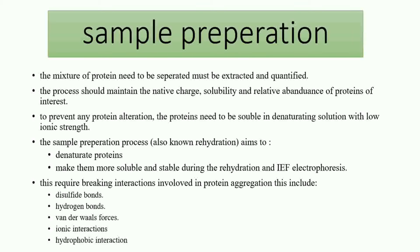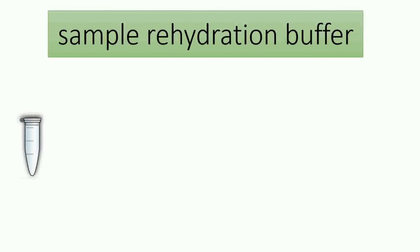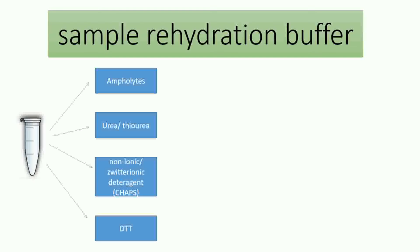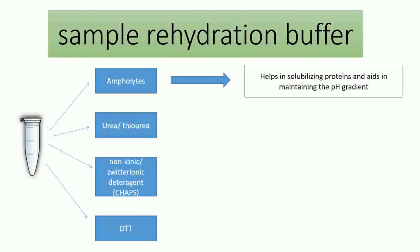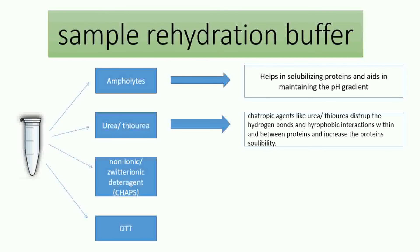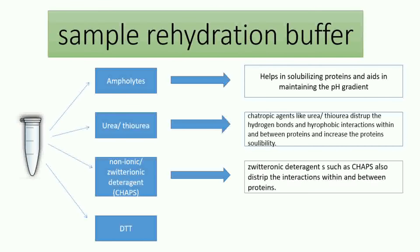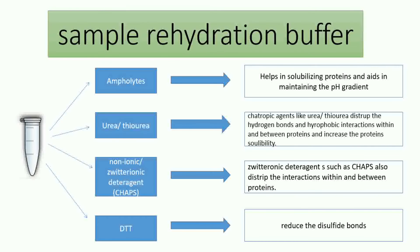In most cases we use a standard buffer for rehydration that contains: ampholytes, which help maintain the pH gradient and make proteins more soluble; urea, which destroys hydrogen and hydrophobic interactions between and within proteins and increases solubility; non-ionic or zwitterionic detergent like CHAPS, which increases solubility by disrupting interactions between and within proteins; and DTT, a reducing agent that reduces disulfide bonds between protein subunits.